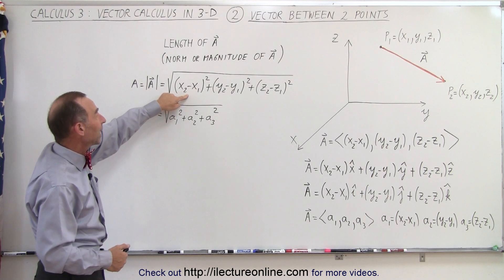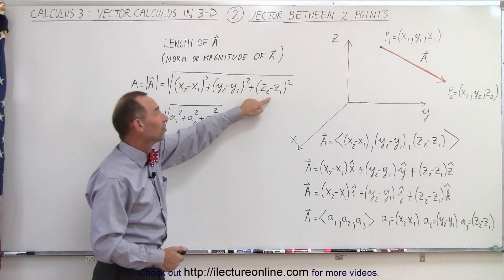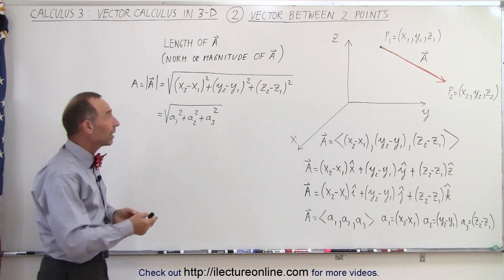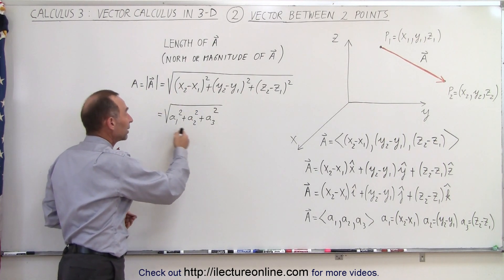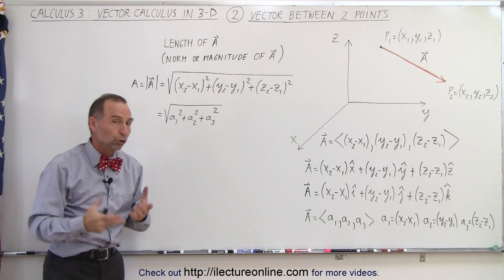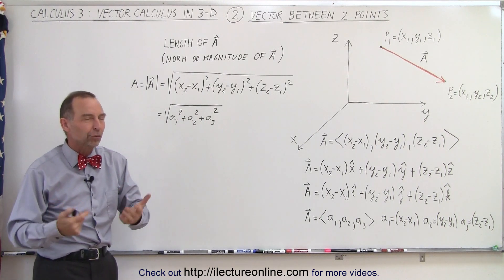It's the difference between the x values, the y values, and the z values squared. Add it together, you take the square root, and it will give you the length of the vector, the norm of the vector, or the magnitude of the vector.